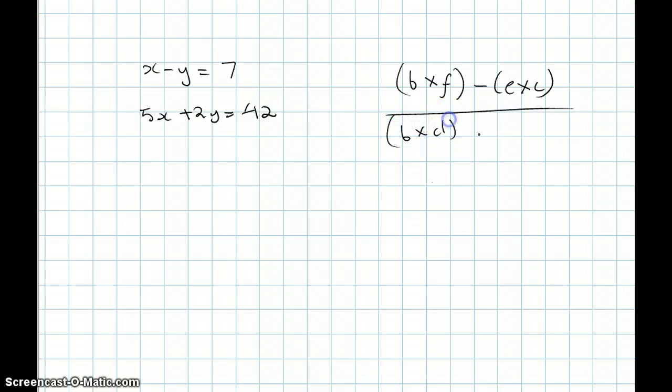So x minus y equals 7, 5x plus 2y equals 42. So here again, we use our equation that we had before: b times f minus e times c over b times d minus a times e.